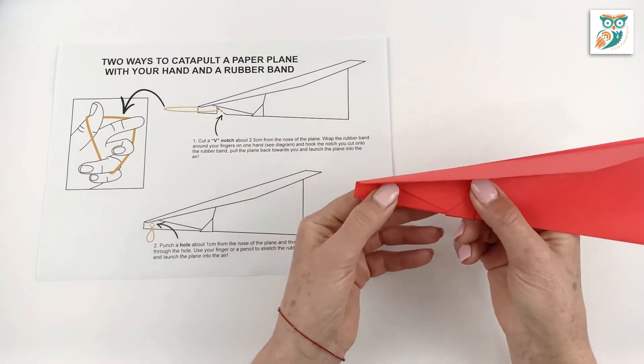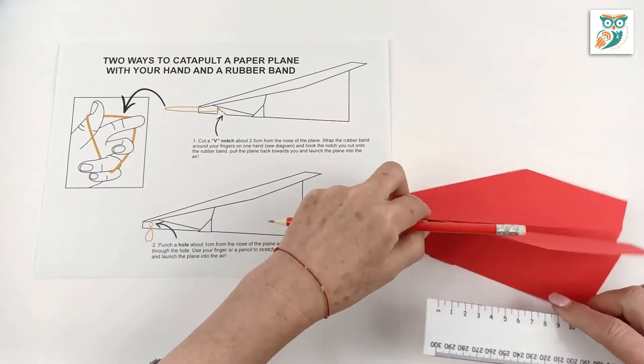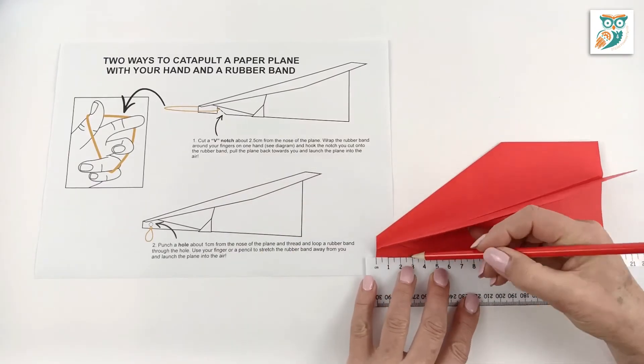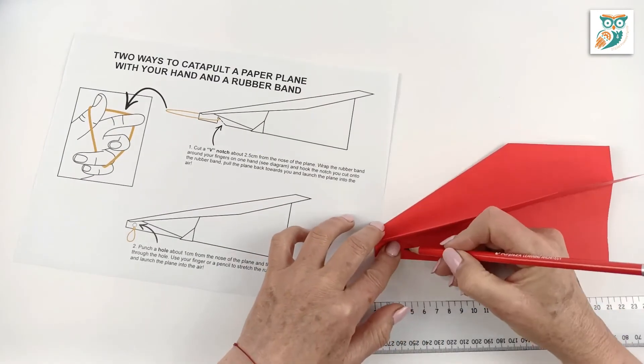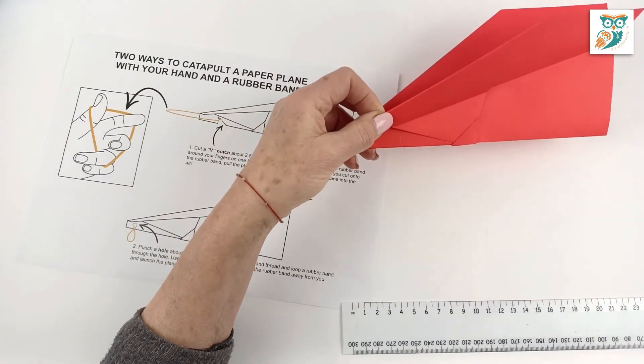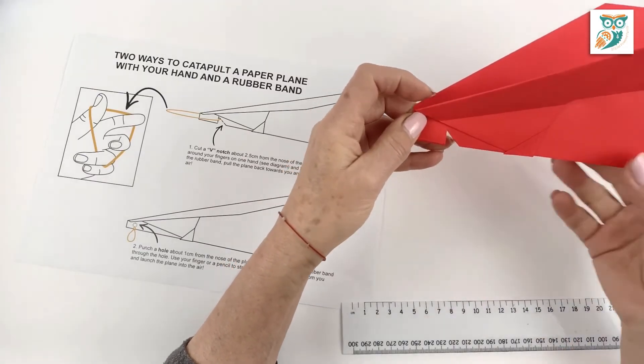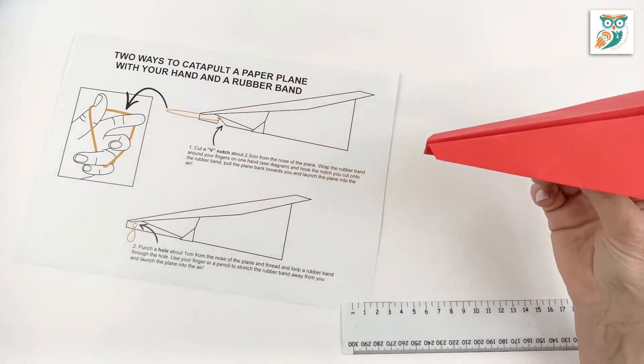Now another way that we can make launchers very simply is using elastics. So the first way you can do this is by making a little notch in your design. So here we're using paper airplane design number two. And we're just marking in a couple of centimeters and then we're going to make a little notch with our scissors. So you see we made like a little triangle there.